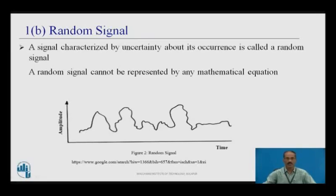Next, random signal. A signal characterized by uncertainty about its occurrence is called a random signal. A random signal does not have a standard mathematical equation. For example, my voice is a random signal because I can pause, stop, raise my volume, or reduce my volume — this you cannot predict. Even noise is also a random signal; we cannot predict what amplitude is going to come or the corresponding time.